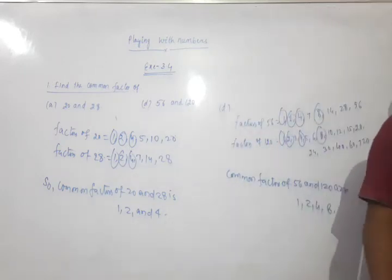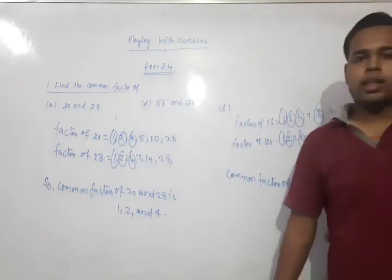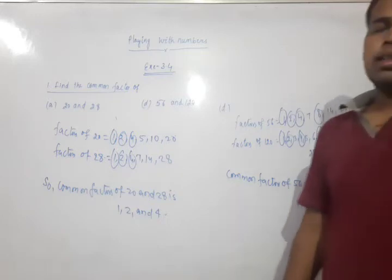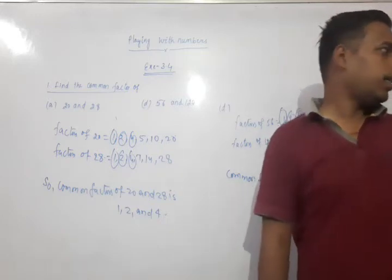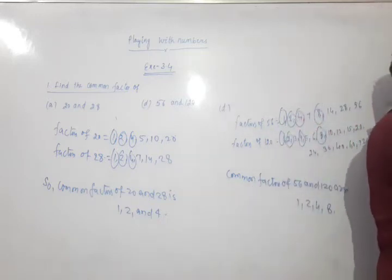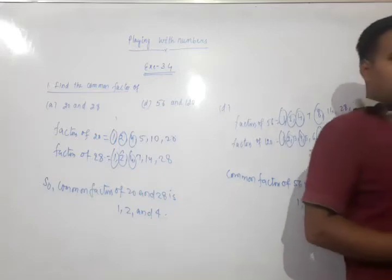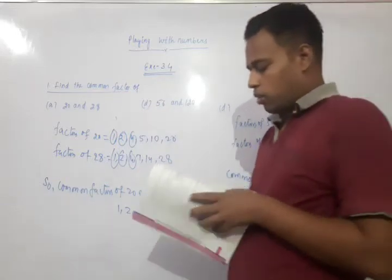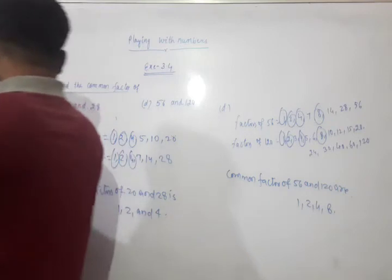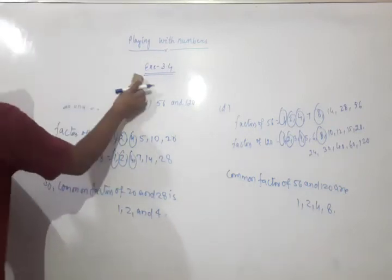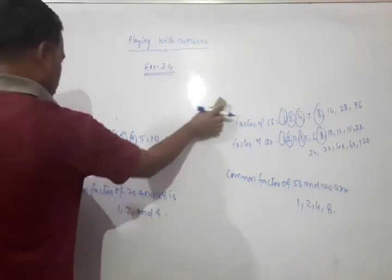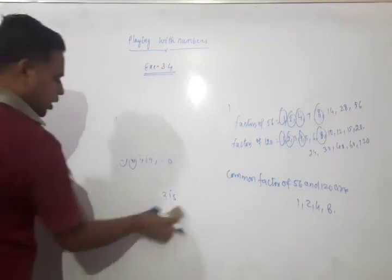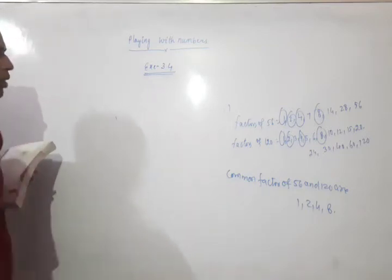Whenever a question asks to find the common factors of given numbers, write the factors of each number separately, see which numbers are common, mark or circle them, and then write those common factors. Now moving to question number 2, which asks us to find the common factor of 3 numbers.